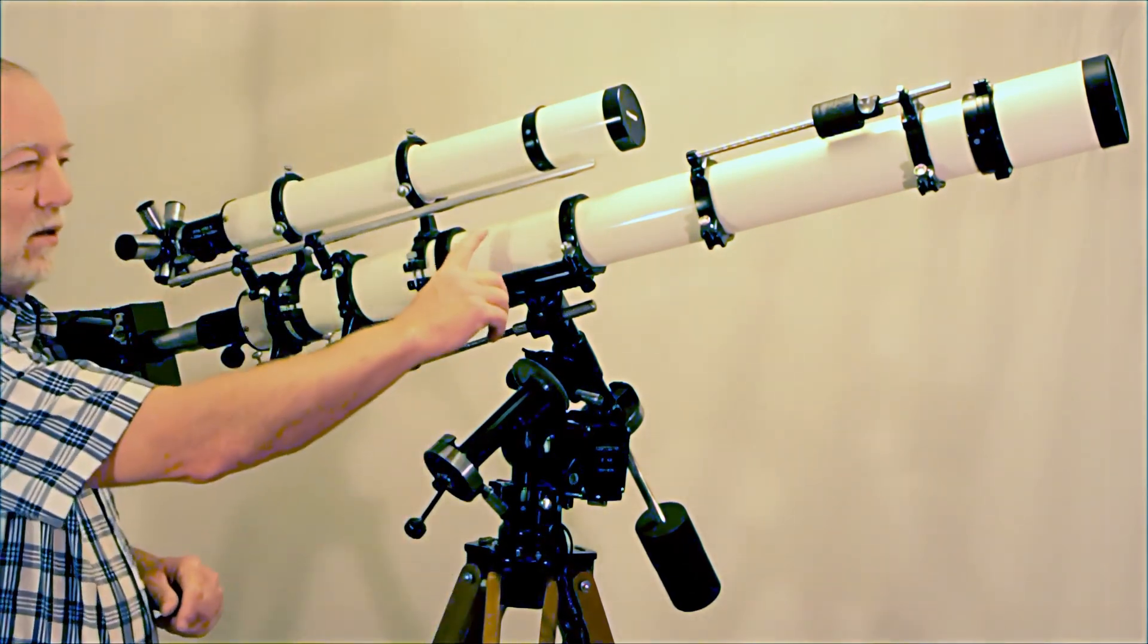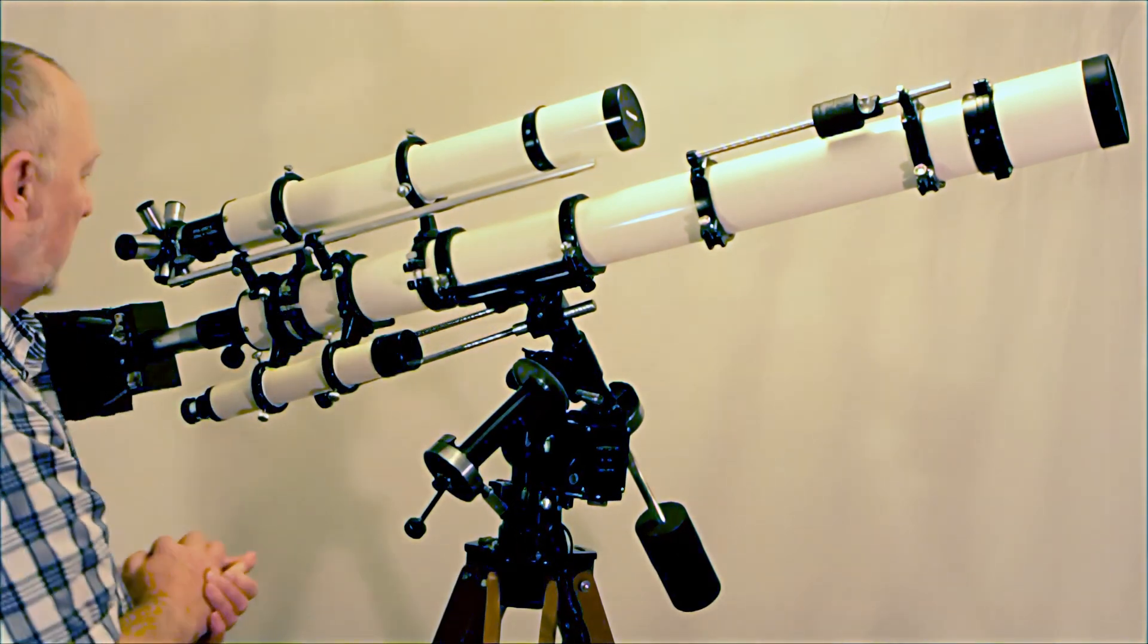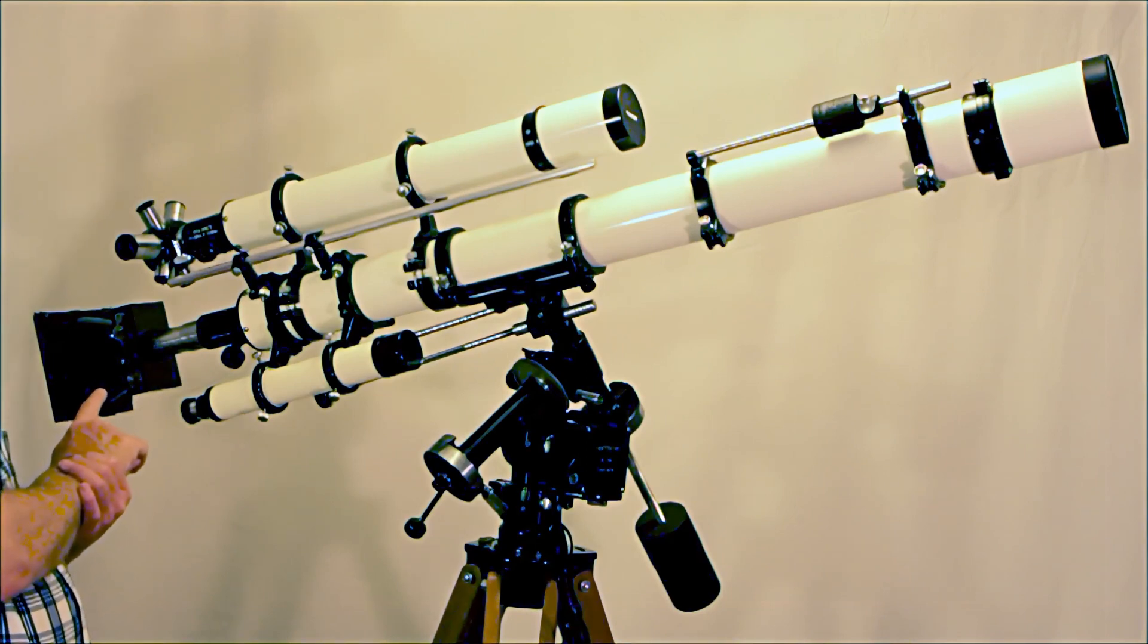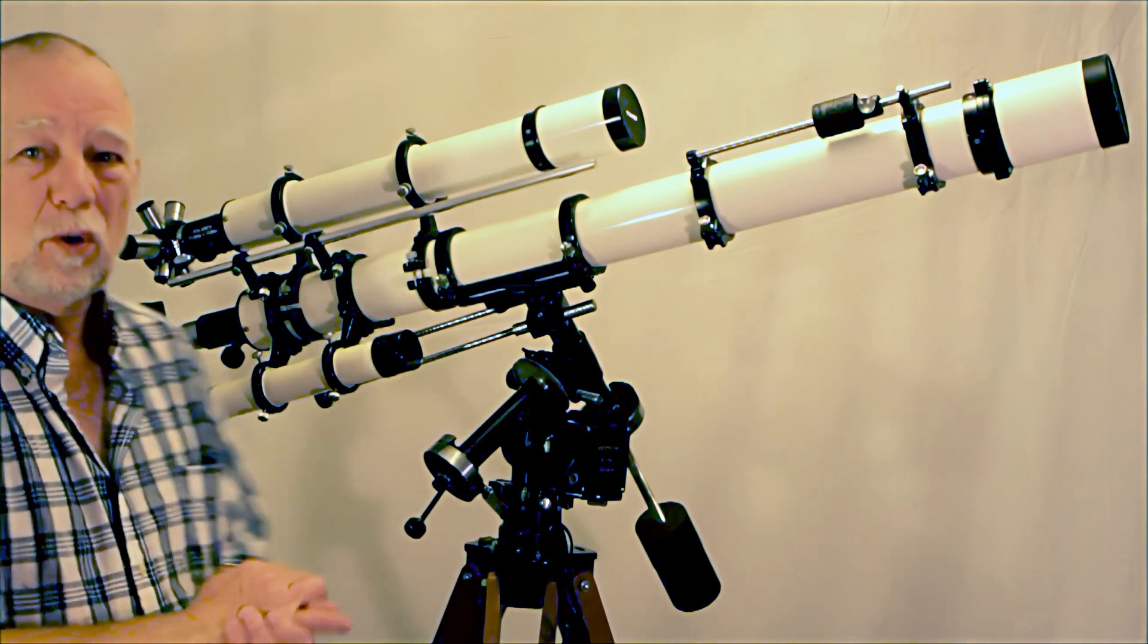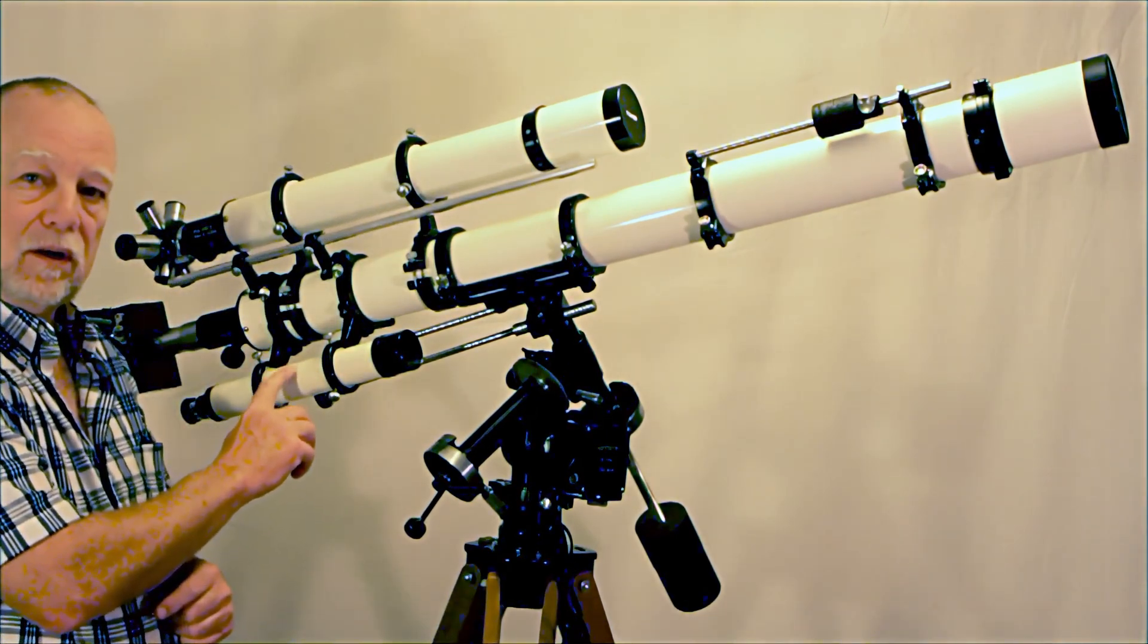First of all it's got the 3-inch telescope, 3-inch Unitron refractor. Back at the tail here is a special astro camera and this would use 4x5 film. This has got a 40 millimeter finder.